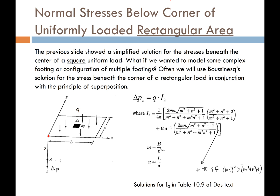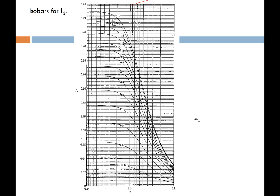If we don't want to compute this equation, there are canned solutions for I-sub-3 in table 10.9 of the textbook, or we can use isobar charts. On those charts, the influence factor is on one axis, M is on another axis, and different contour lines represent different values of N. You match up your computed M with your computed N, go to the appropriate line, and interpolate your value for the influence factor.